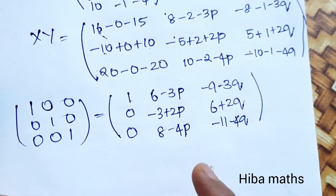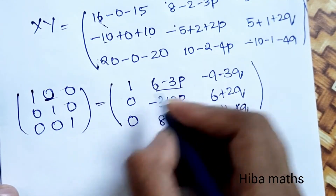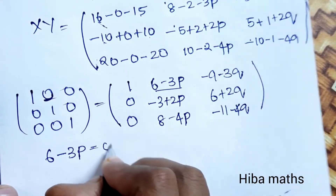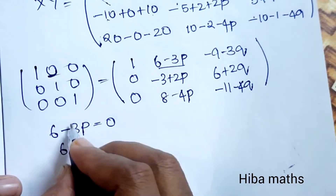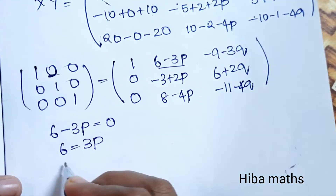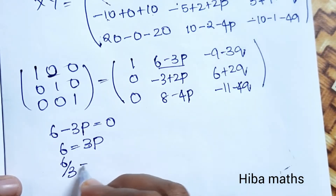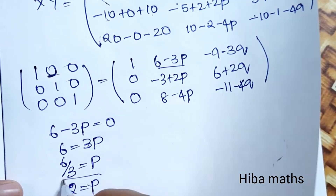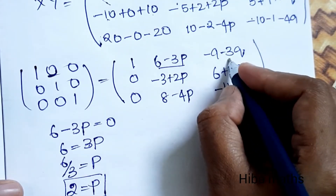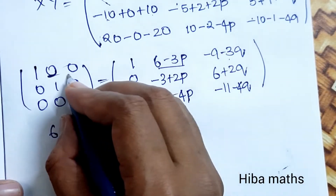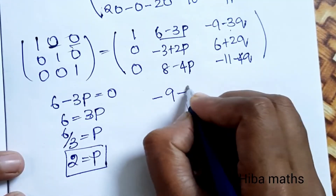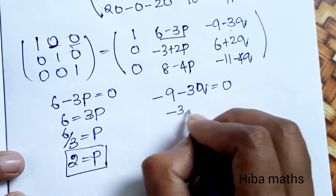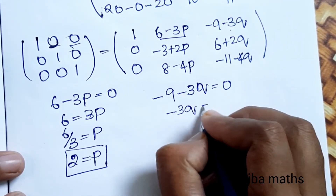Comparing element by element with the identity matrix, first value: 6 minus 3P is equal to 0. So 6 equals 3P, therefore P equals 6 divided by 3, therefore P is equal to 2.